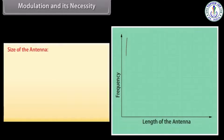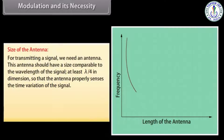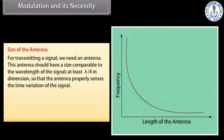Size of the antenna: for transmitting a signal, we need an antenna with a size comparable to the wavelength of the signal — at least λ/4 in dimension — so that the antenna properly senses the time variation of the signal. For an EM wave of frequency 30 kHz, the wavelength λ is 10 km. It is not possible to construct and operate such a long antenna.